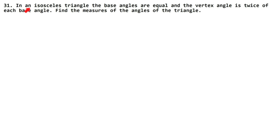In this question, in an isosceles triangle, the base angles are equal. Let's make an isosceles triangle — so this is an isosceles triangle. The base angles are these and these, and both are equal.